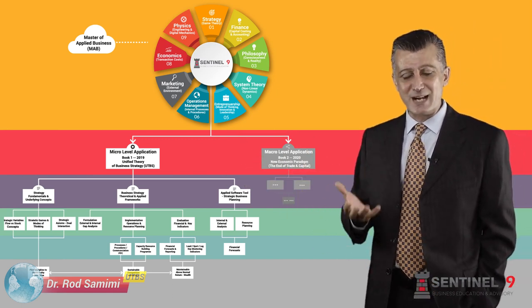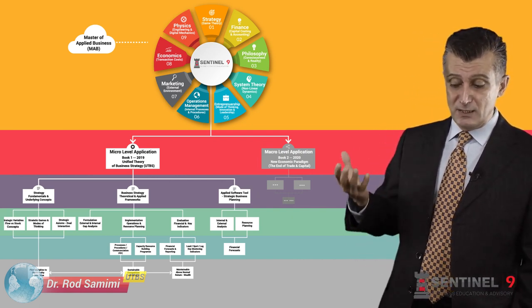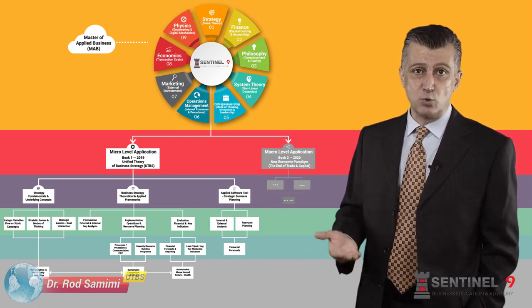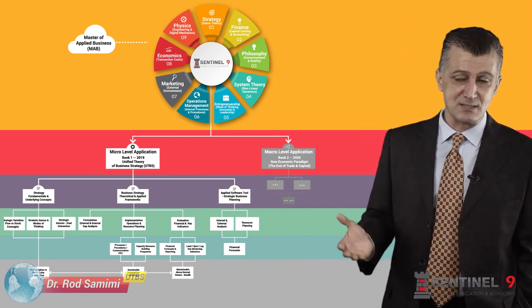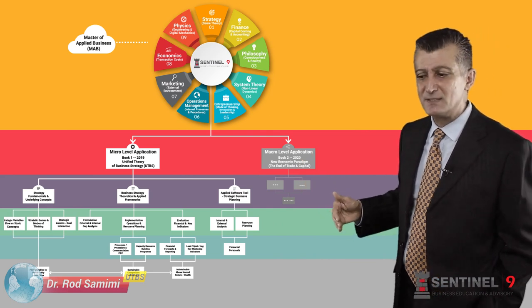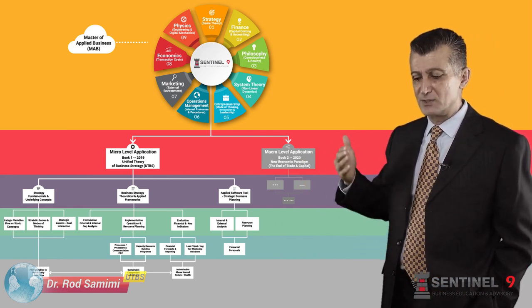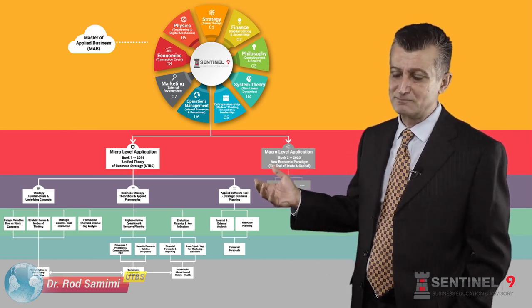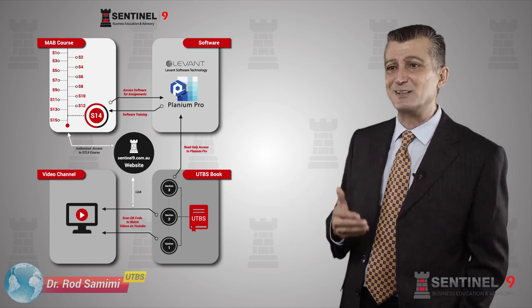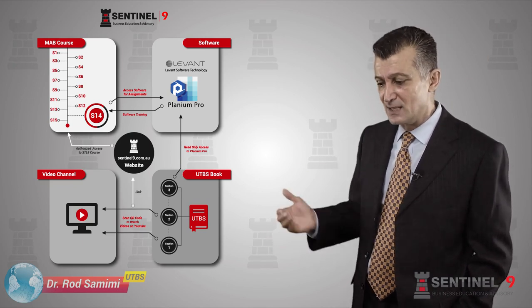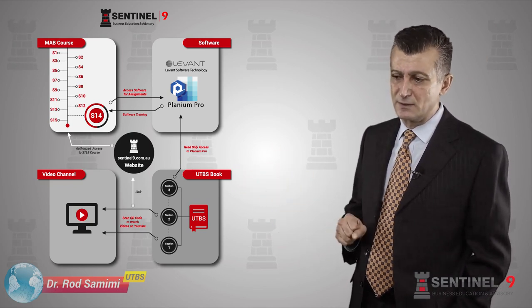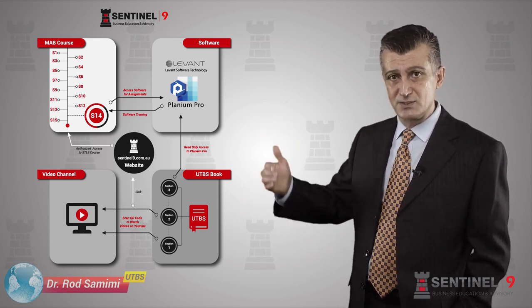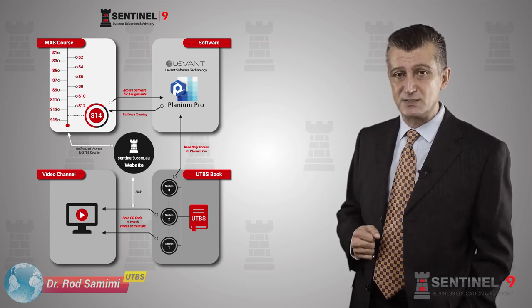Section three introduces a practical, pragmatic, day-to-day software tool that can be used to incorporate within strategic business plans the concepts covered in sections one and two. The book also has appendices covering background information, a review of strategic management and business strategies, schools of thought, and so forth. The book and material have links through QR codes and electronic means to sets of video clips, as well as to certain sections of the software mentioned in section three.